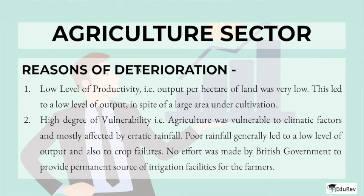The state of the agriculture sector: Agriculture was the main source of livelihood for most people of India. Almost about 85% of the country's population lived mostly in villages and derived livelihood directly or indirectly from agriculture. In spite of such a large segment of the population being dependent on agriculture, this sector was facing stagnation and constant deterioration. Key issues included low level of productivity — the output per hectare of land was very low, leading to low output in spite of a large area under cultivation.